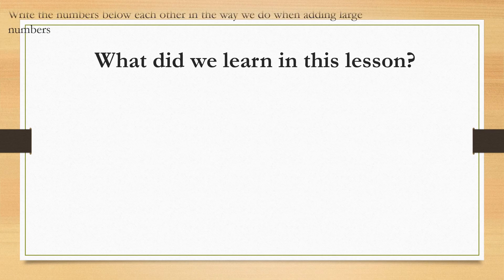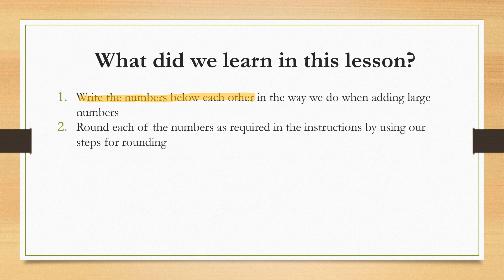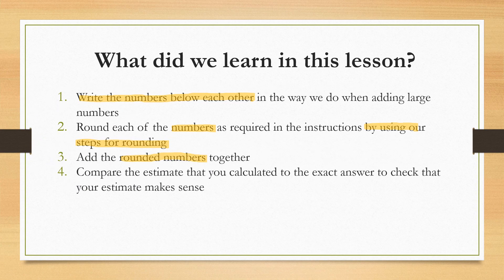In this lesson, we learned that when given a rounding example where we need to apply addition, we first need to write the numbers below each other in the way that we do when adding large numbers. Next, we round each of the numbers as required using our steps for rounding. We then add the rounded numbers together since we had been asked to apply addition. We also compared the estimate to the exact answer, and we used this method to check that our estimate makes sense.